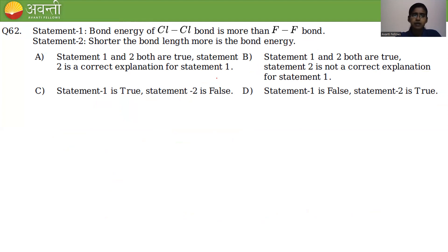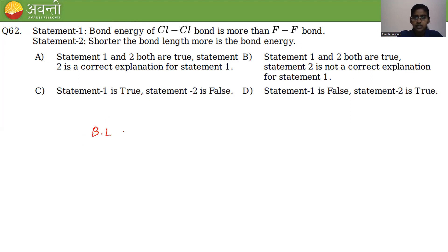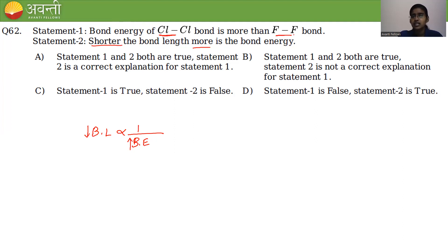Question 62 has two statements. Statement 1 says the bond energy of the Cl-Cl bond is more than the F-F bond — that is correct. Statement 2 says shorter bond length means more bond energy; bond length is inversely proportional to bond energy — that is also correct.